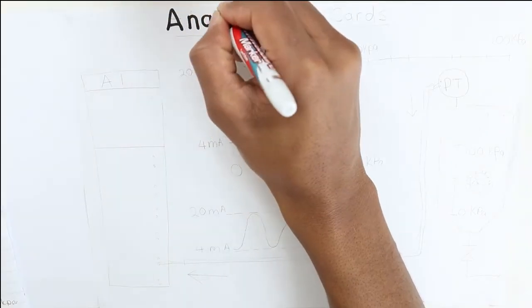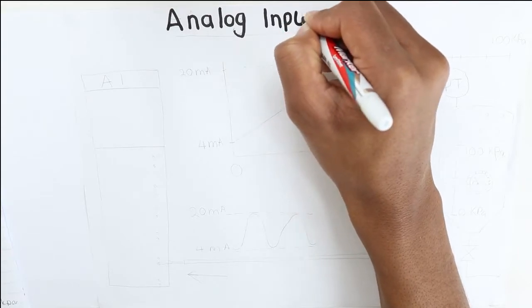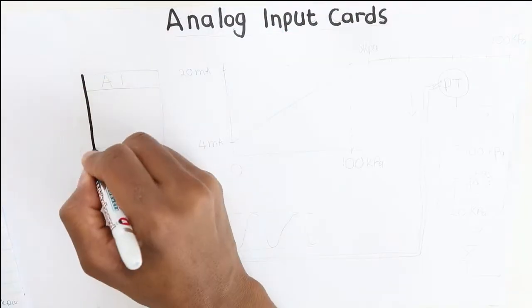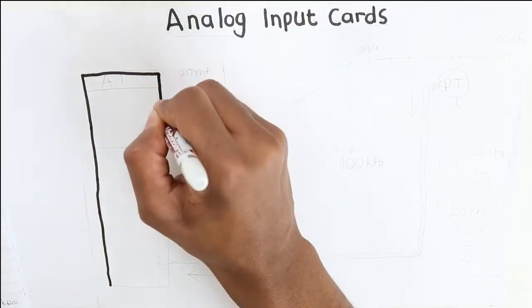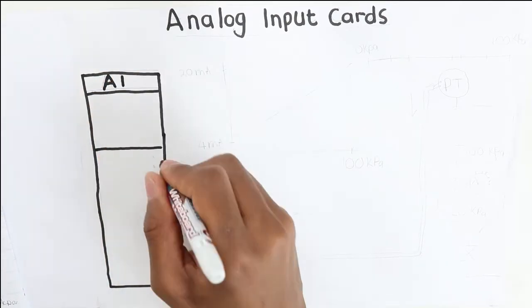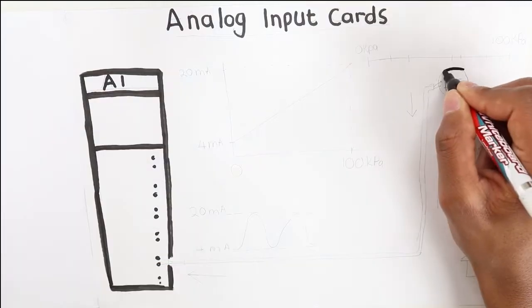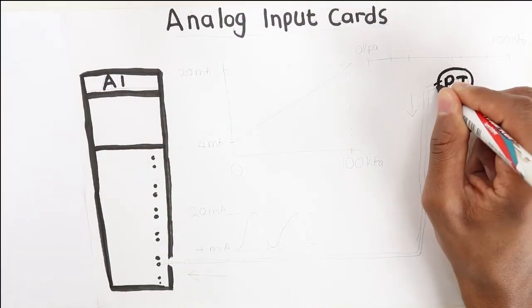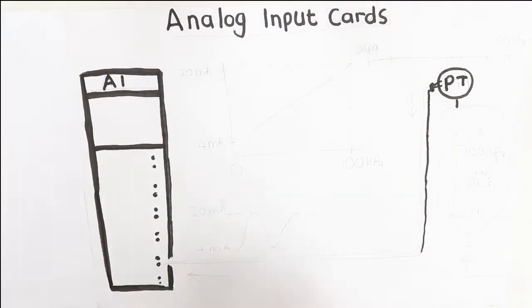The third card is the analog input card. This card reads analog signals from analog field devices and passes that signal to the CPU of our PLC. Analog means that a device will send a signal of various values for a particular range.